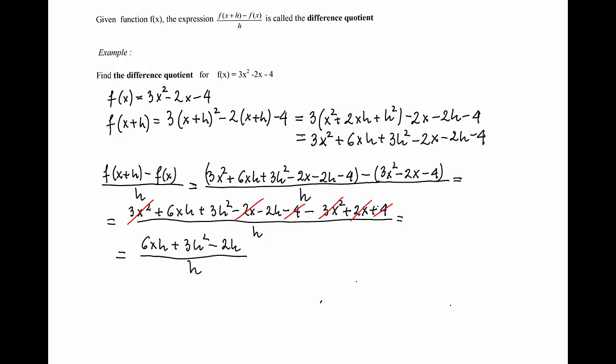When simplifying the difference quotient, the idea is to remove h from the denominator. So if I want to cancel h in the denominator, I should have h in the numerator. If you look at the numerator, you can see that h can be easily factored out from the whole term. We have left in the parentheses 6x plus 3h minus 2.